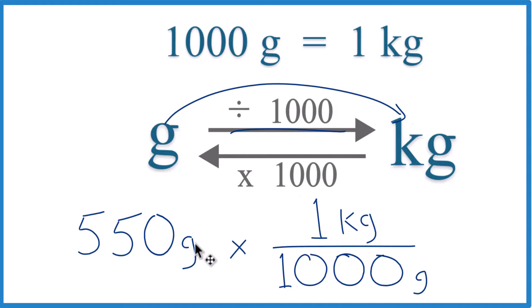Now when we multiply, we have grams on the top and the bottom, they cancel out. 550 times 1 kilogram is 550 kilograms divided by 1,000. We get the same number, 0.55 kilograms.